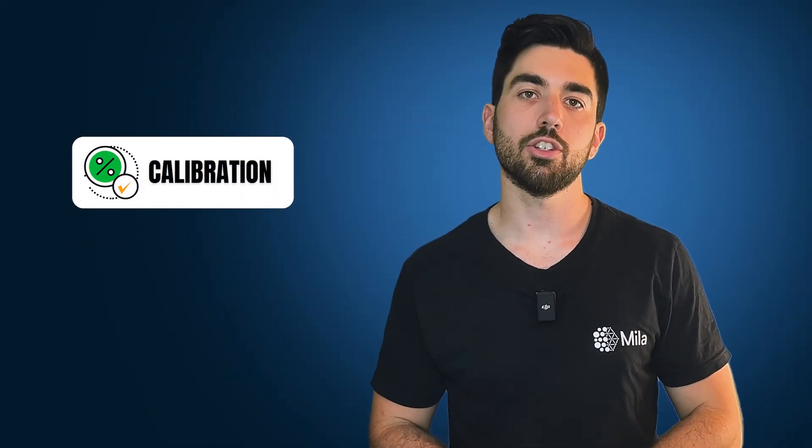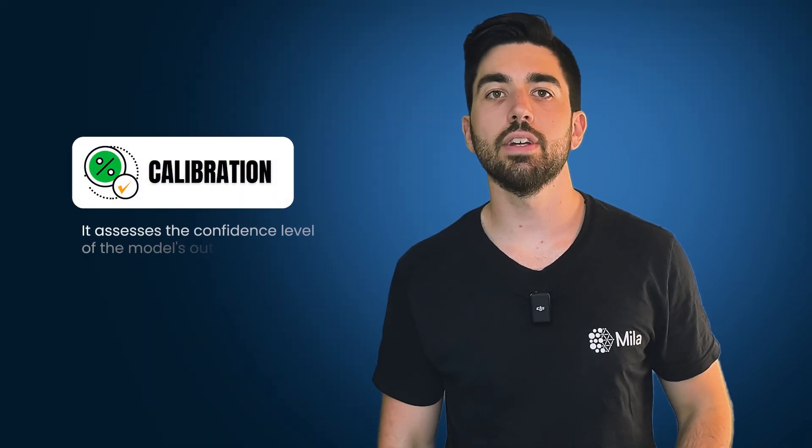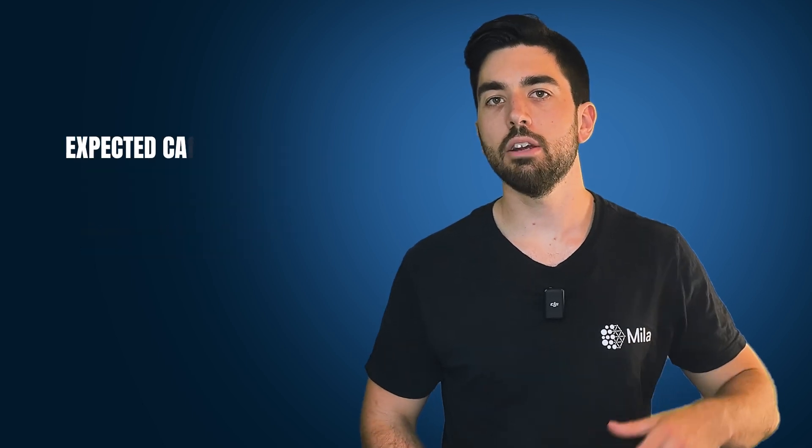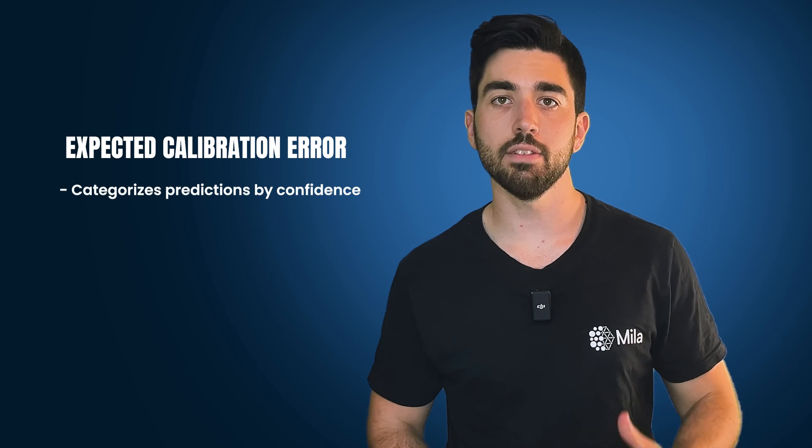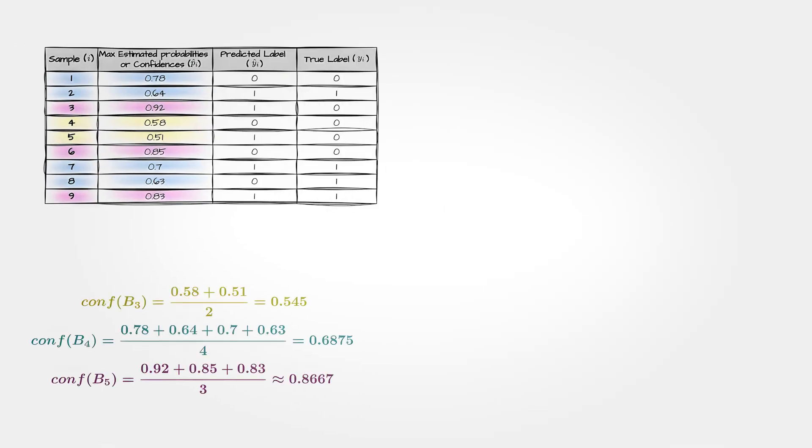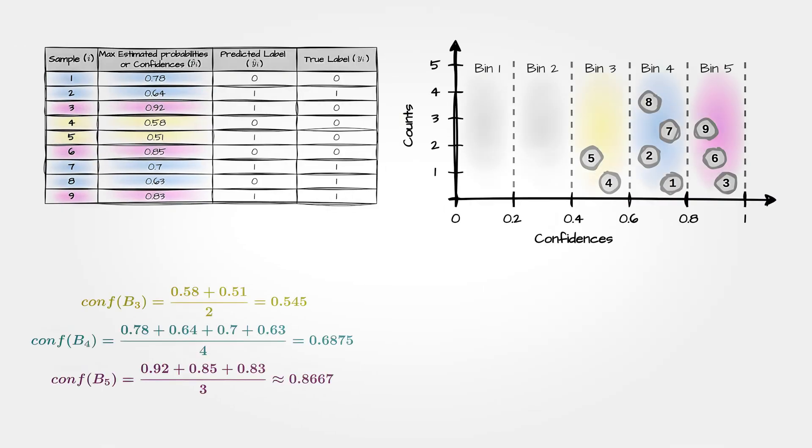Then, we have Calibration. Calibration assesses the confidence level of the model's outputs. For example, there's the expected calibration error, which categorizes predictions by confidence. It does that by first grouping predictions by confidence level. Imagine that the model makes a bunch of predictions and says how confident it is about each one. For example, it's 70% confident or 80% confident on that one.